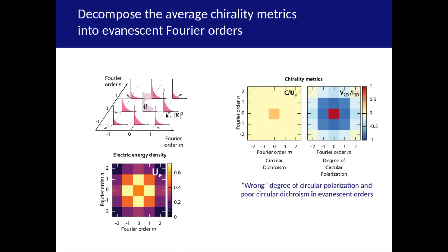Now, if we look at the chirality metrics of the Fourier orders, it tells us exactly what is wrong with the silver disk system. CD has vanished in all the Fourier orders and the strong evanescent orders have the wrong circular polarization, which is what causes the spatial cancellation.